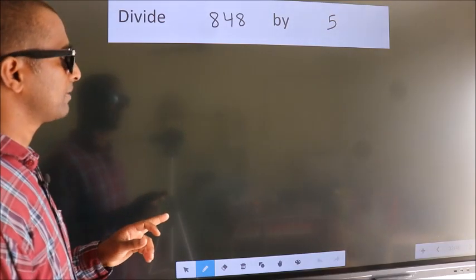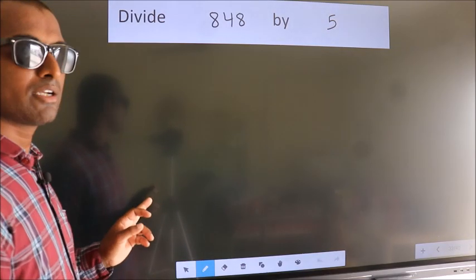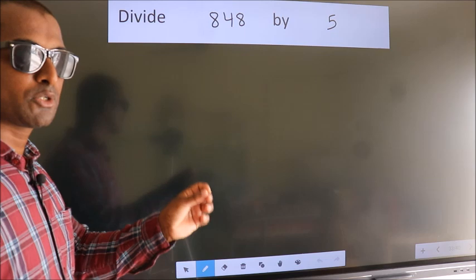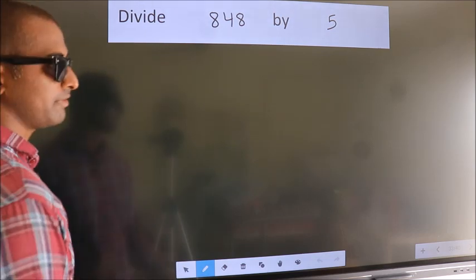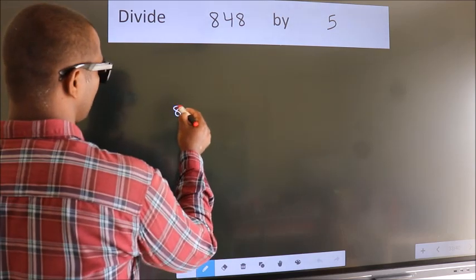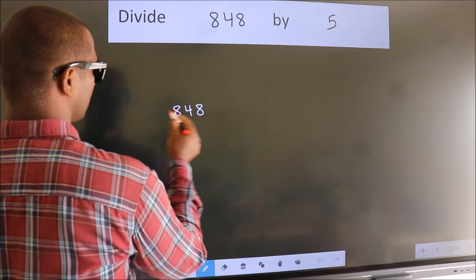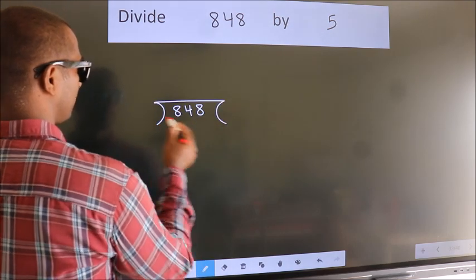Divide 848 by 5. To do this division, we should frame it in this way. 848 here, 5 here.